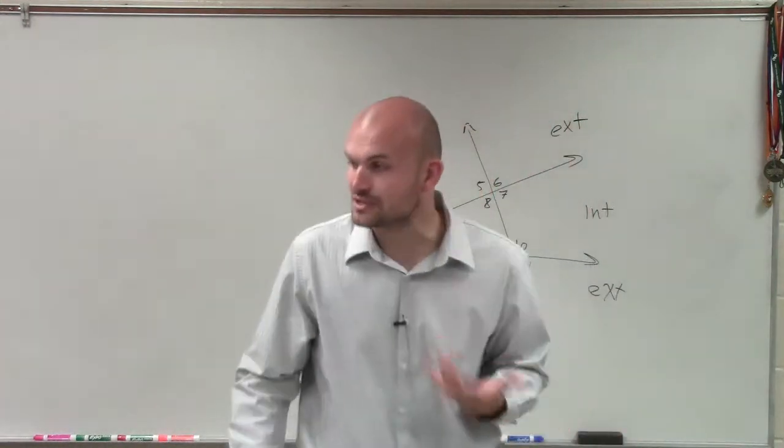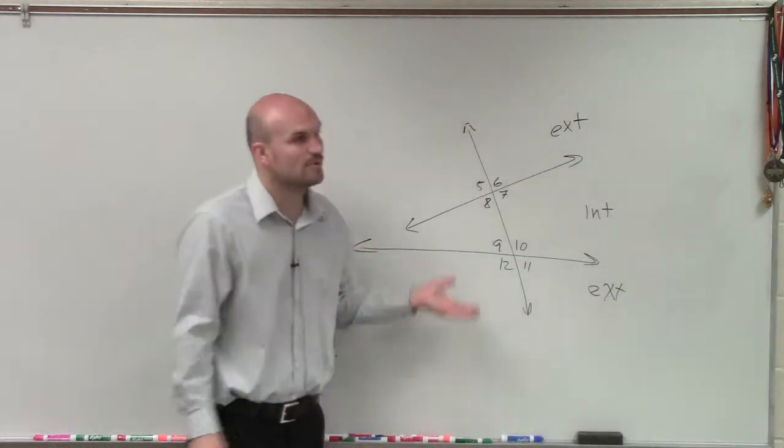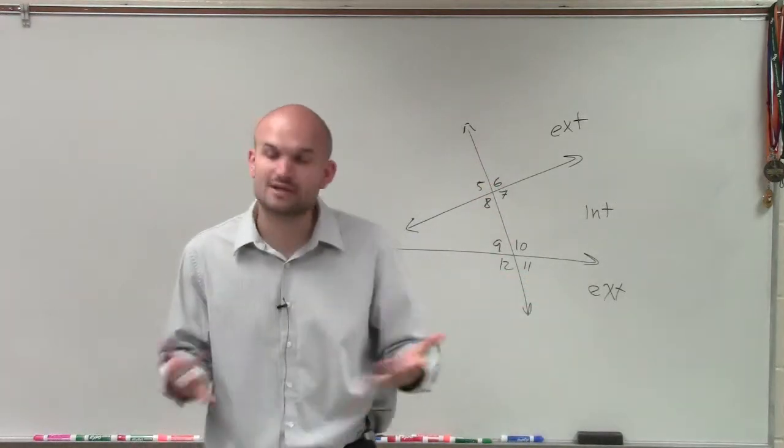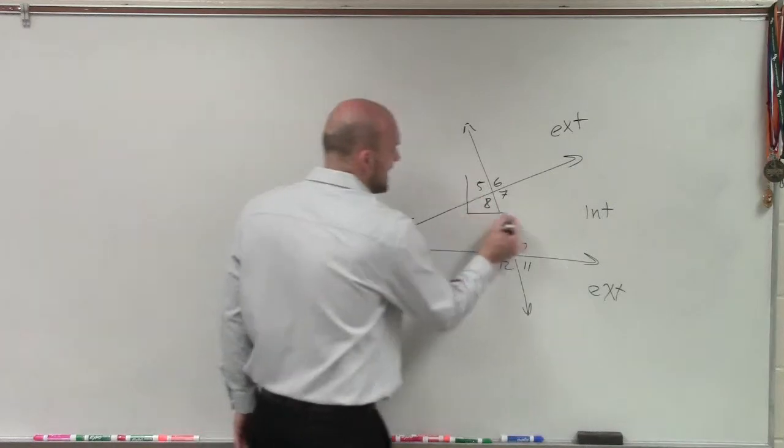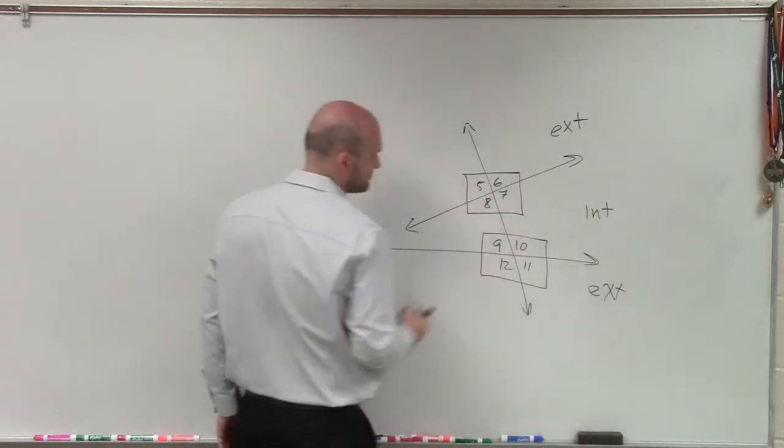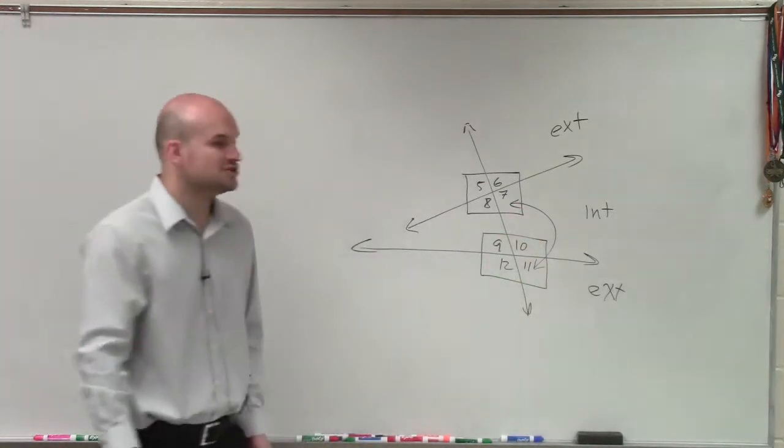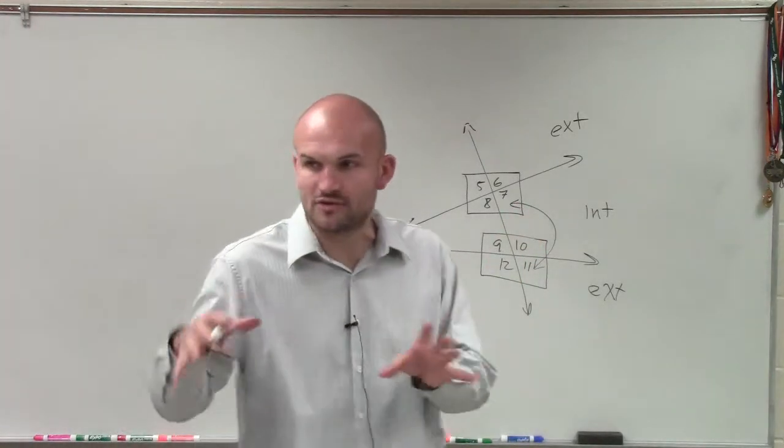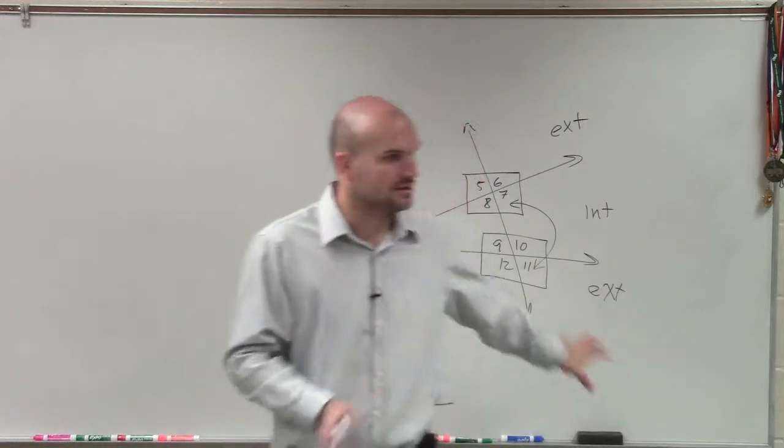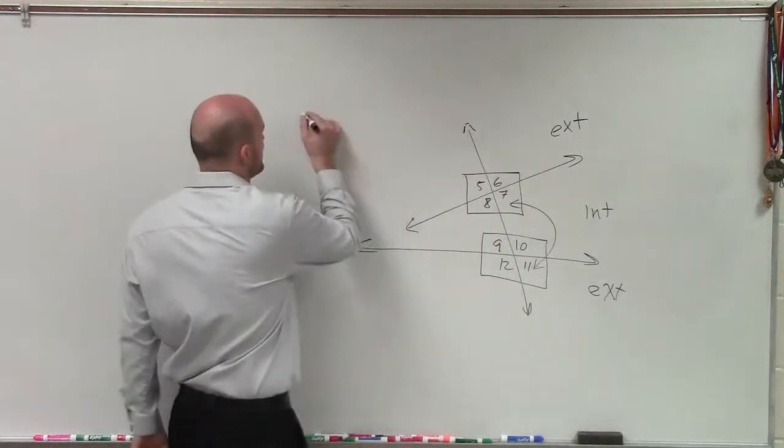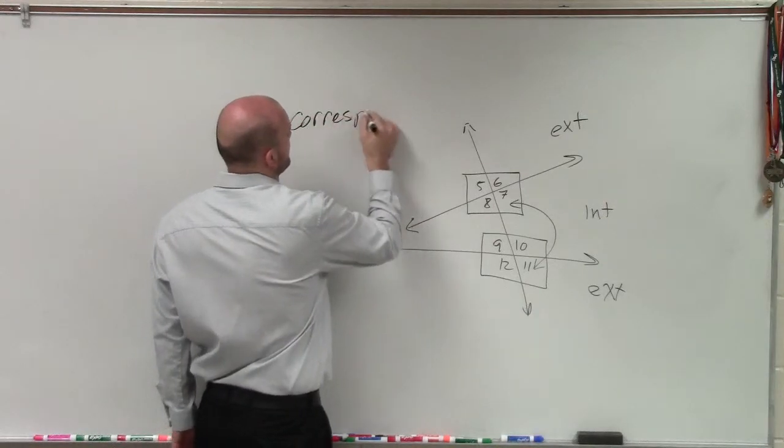And then there was that one that was corresponding. And what corresponding does is corresponding talks about when we have an angle that's interior or exterior, but it just doesn't mean that you have an interior and an exterior angle. These angles have to be in the same position. When you guys look at those intersections, do you guys see how 7 and 11 are both in the bottom right hand corner of that intersection? So therefore, these are what we call corresponding angles.